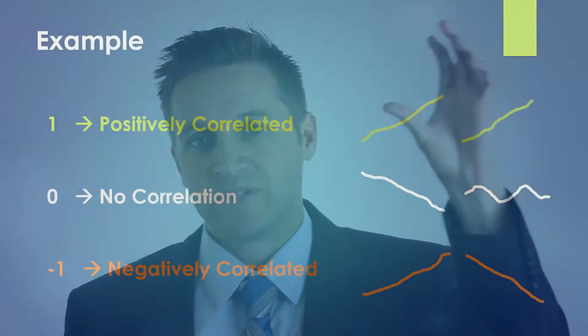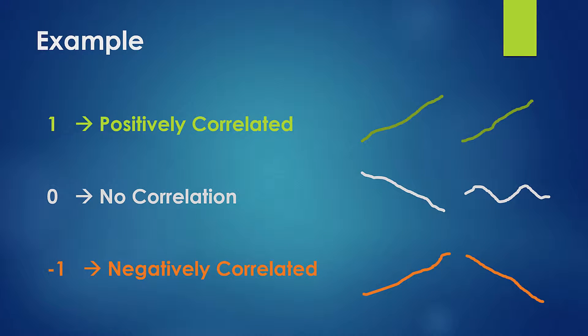If the number is positive, they're positively correlated. If it's negative, they're negatively correlated. And if it's zero, that means there's no correlation — there's no discernible relationship there.